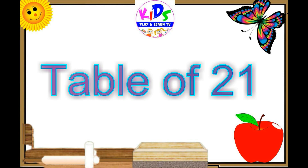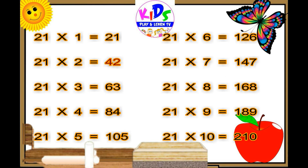Let's repeat. 21 ones are 21, 21 twos are 42, 21 threes are 63, 21 fours are 84, 21 fives are 105, 21 sixes are 126.